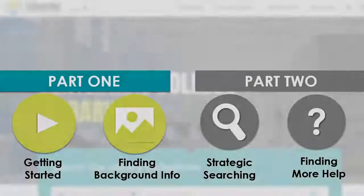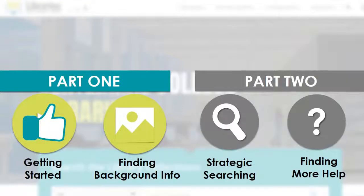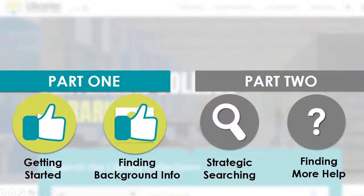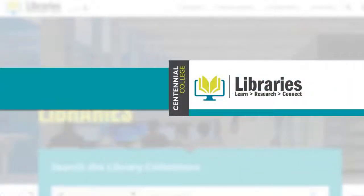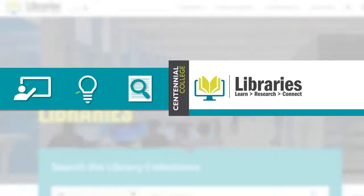You now know how to get started using library resources and how to find some background information and keywords on your topic. Next, watch part two of our COM 170 video research guide to learn how you can use your keywords to conduct a strategic search for articles for your assignment and get more help accessing library resources. Find the support you need at Centennial College Libraries. Learn. Research. Connect.